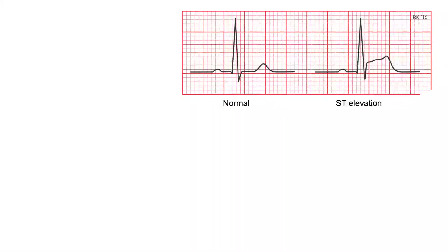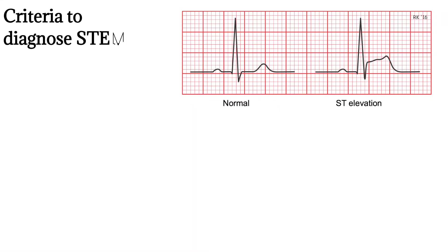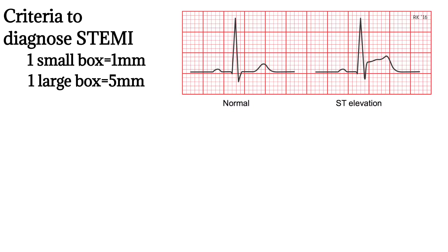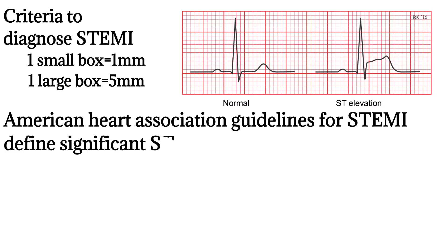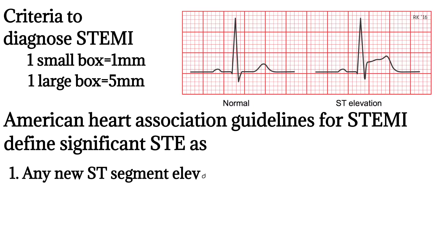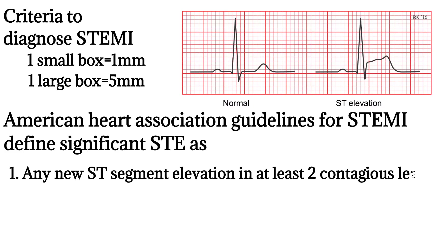Let's talk about the criteria to diagnose ST elevation myocardial infarction, or STEMI. For that, we need to have an orientation of the dimensions of the boxes on an EKG strip. One small box is 1 mm, and one large box contains five small boxes, so it is 5 mm.